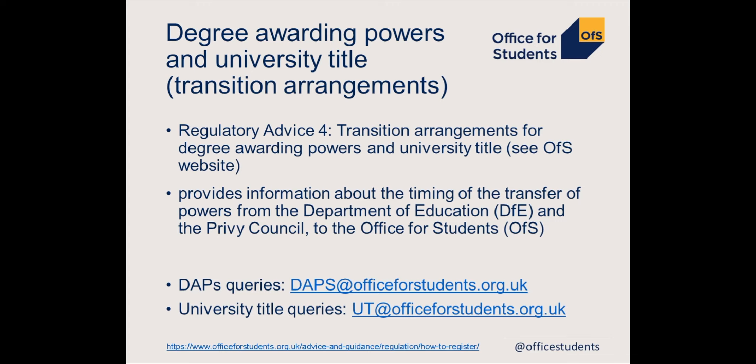We've published a document on the transition arrangements for degree awarding powers and university title, which is on the website. It sets out the next few milestones in the process and includes information about the timing of the transfer of powers from the Department for Education and the Privy Council to the Office for Students. If you have questions specifically relating to degree awarding powers or university title, we've set up dedicated email addresses which are on screen, and our team working on degree awarding powers will be able to pick up your specific questions.